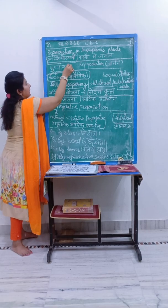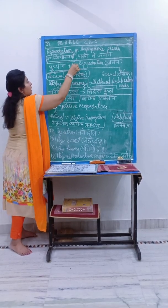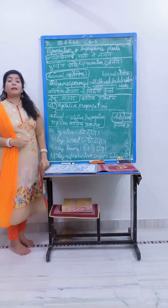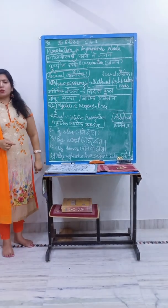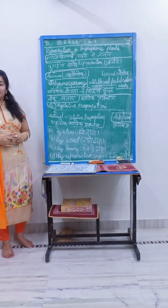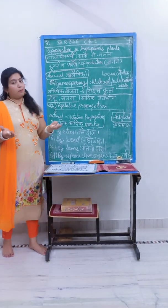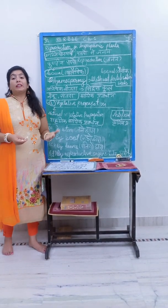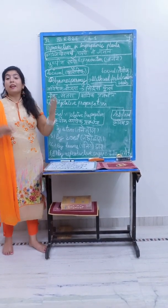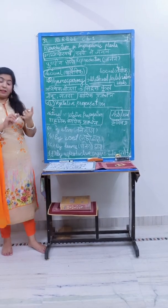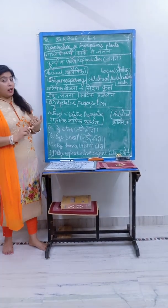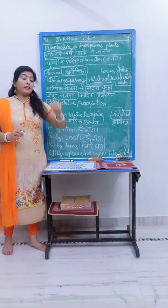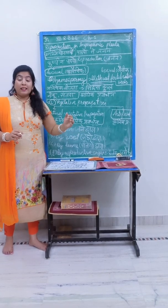In the 11th class, I had told you about pushpiya padap — flowering plants. Not all plants are flowering plants. Students, you know there are five kingdoms in the Plant Kingdom. First of all, there are algae, or shawal — aquatic organisms.